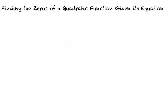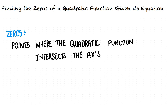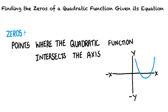What do we mean by zeros of a quadratic function? The zeros of a quadratic function are the points where the function intersects the x-axis. Let us consider a coordinate system. Let's say we have a quadratic function which is the curve plotted in blue. The points encircled in green would be the zeros of this quadratic function.